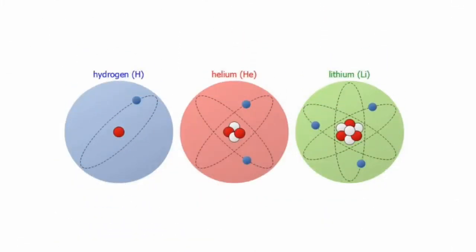So this means that by definition, hydrogen, the first element on the periodic table, has one proton. Helium has two protons. Lithium has three protons. And so on.